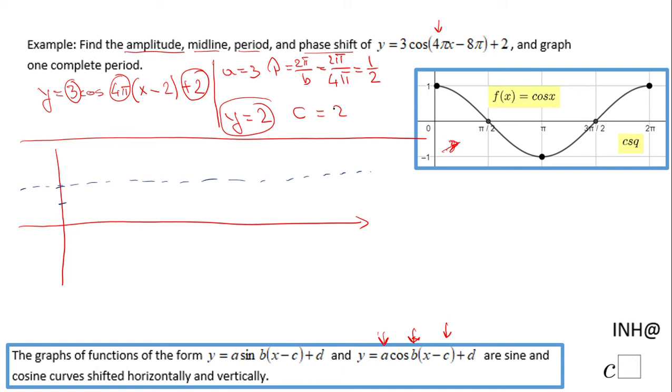Looking at this phase shift of c equals 2, that means all these points you see here, all these five points, are going to be shifted to the right two units. Also, the period is 1/2, and that means these two points are going to be 0.5 away. My graph is not going to look accurate, but it's going to give me the exact information about the five points you see in the picture.